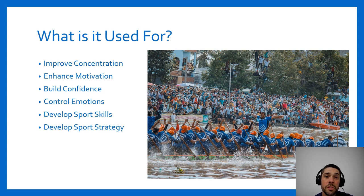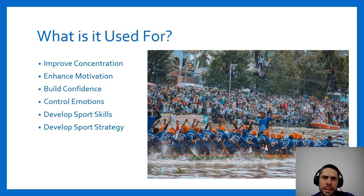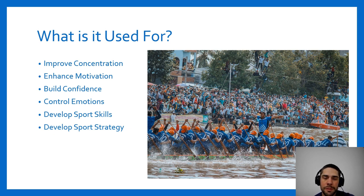We can also use imagery to develop strategy. A quarterback in football might visualize passing options in certain situations. A runner might visualize different race scenarios — seeing all the different situations that can unfold in the race, coming up with a response for each one and planning it out in the mind. No great athlete who's ever accomplished anything great didn't first see it happen in their mind. Every kid on a recess basketball court shoots the game-winning shot in their mind as the bell rings — they're already doing it.